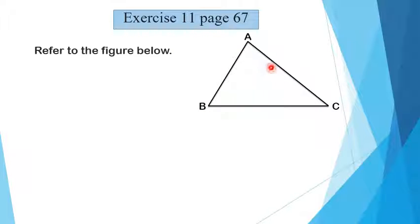Triangle ABC has three vertices: vertex A, vertex B, and vertex C. It has three sides: the first side AB, the second side BC, and the third side CA. It has three angles: the angle here is BAC, this angle is ABC, and this angle is ACB or BCA.